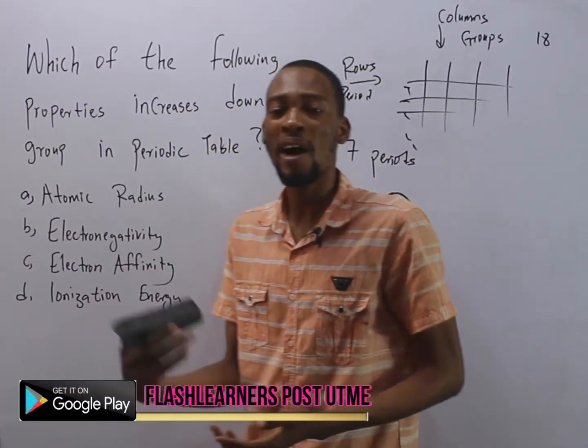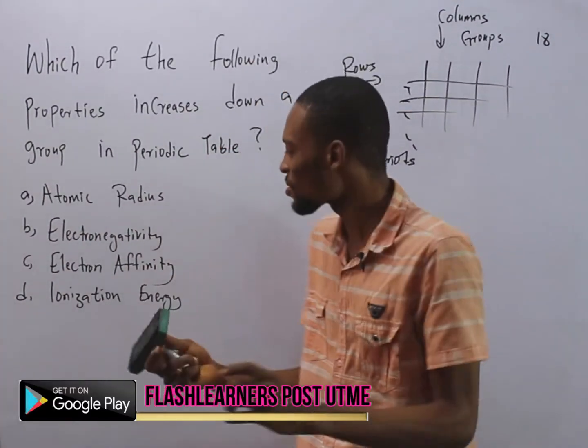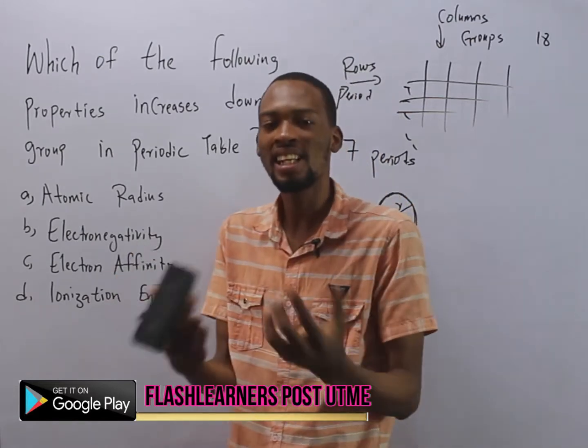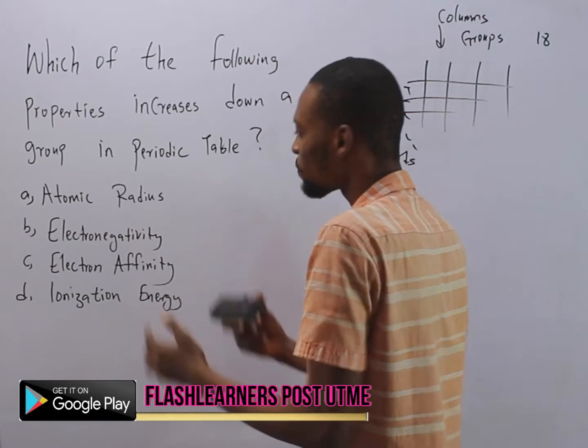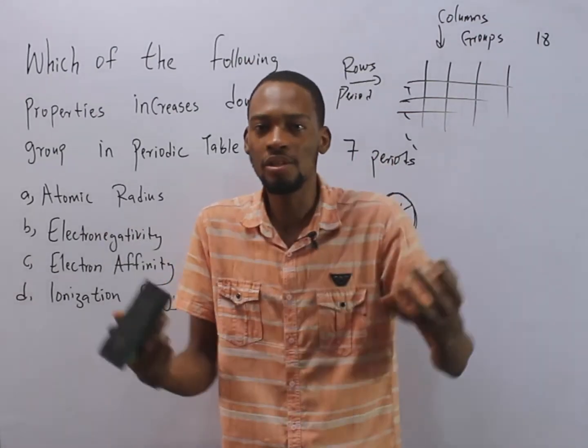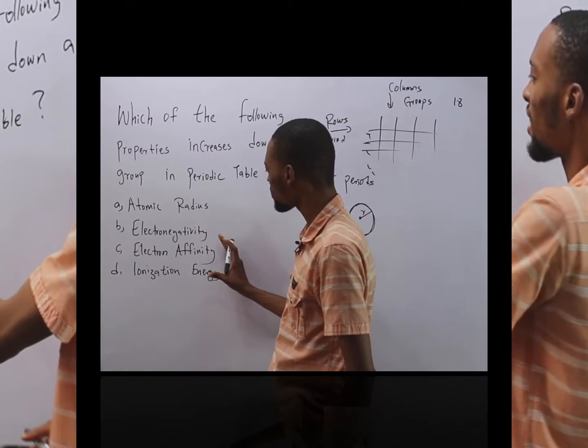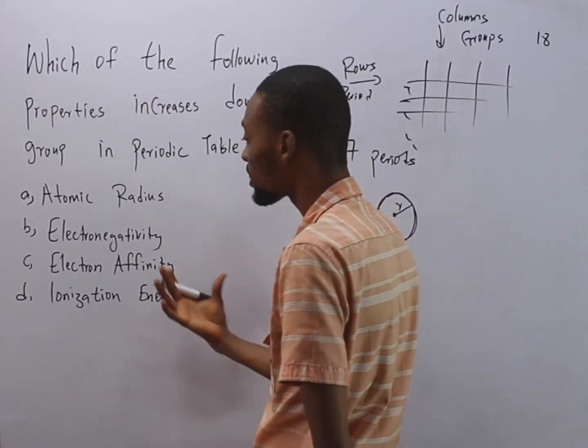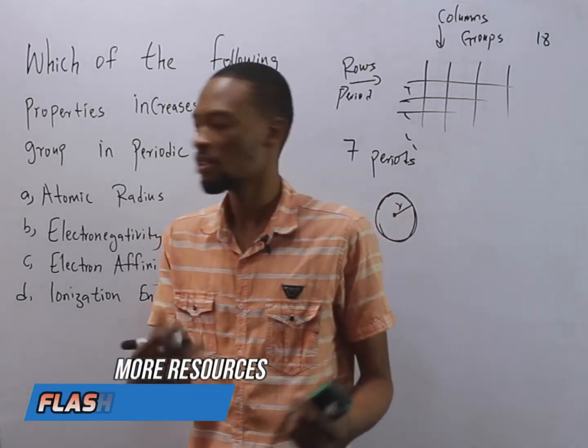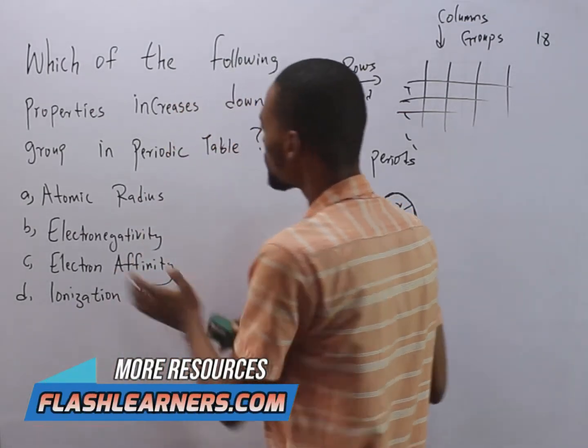Ionization energy is the energy required to remove an electron from an atom in ground state. While electronegativity is the power of an atom to attract electrons to itself. Electron affinity is simply the energy released when an atom in a molecule attracts electrons. So these are the properties in periodic table.